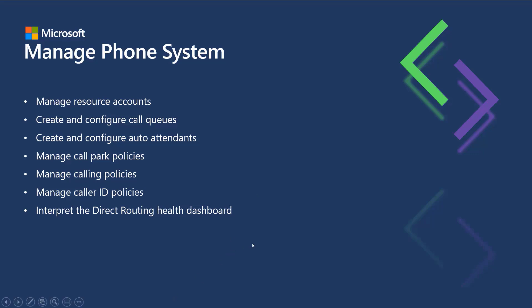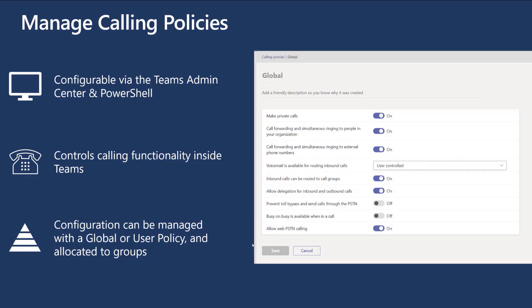Let's cover two sections at a very high level. Calling policies are there to control the calling functionality made available to your users. At a high level, we have a global policy and user policies that you can scope individually to users. All of this is configurable via the Teams admin center and with PowerShell, and you can also allocate this to groups using personas. This enables you to turn on or off advanced features such as call forwarding off Teams, or whether voicemail is available depending upon the account. So you're going to be expected to understand what the calling policy effectively does — it's worth having a play on a test tenant.